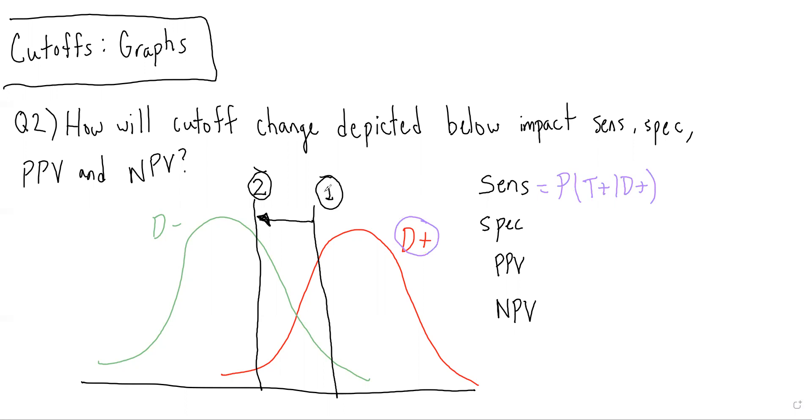We can see that when we move from one to two, we're getting this additional chunk of area that now lies to the right of the cut-off, which is test positive, and therefore we would expect sensitivity to go up.